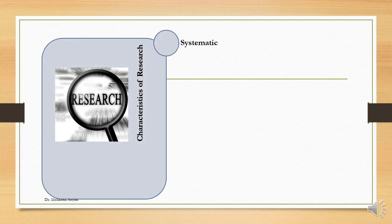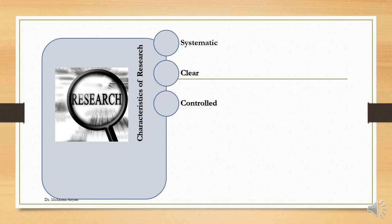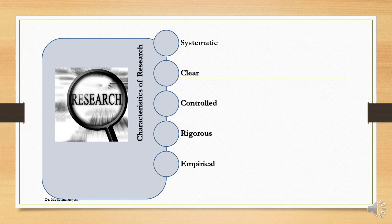Let us look into the characteristics of research. Research is a systematic activity, carried forward in a systematic way from identification of the problem to testing of hypothesis. Research involves clarity with regard to the concepts, population, sample, and tools. Research is done in a controlled way because the scope, limitations, and delimitations are set properly. The investigator carries forward all the steps in an extremely careful manner, making it a rigorous exercise. Research is a process which can be verified and tested by repetition by any other investigator. Hence, research is empirical. Each research also gives scope for further research.